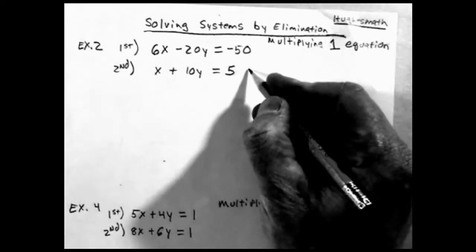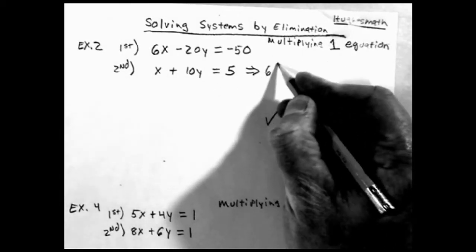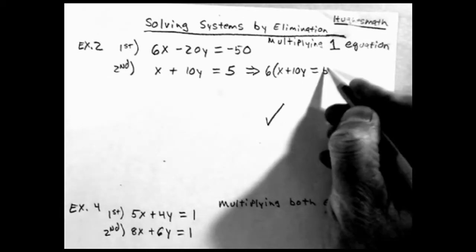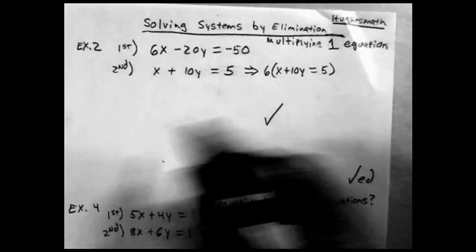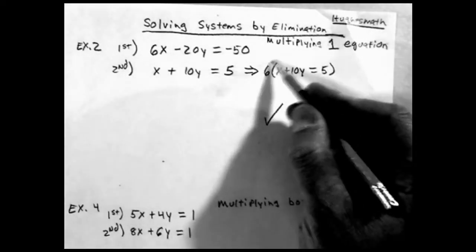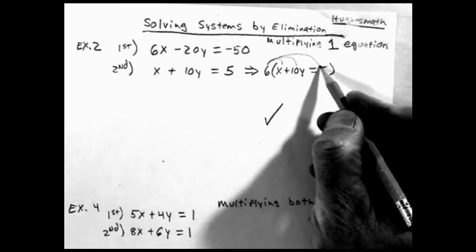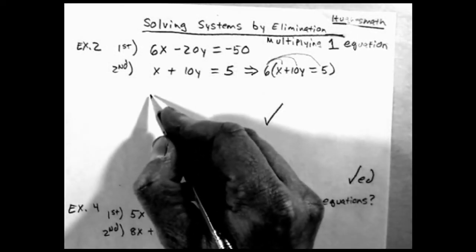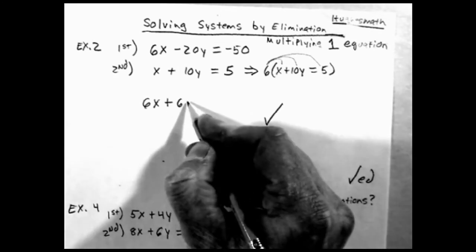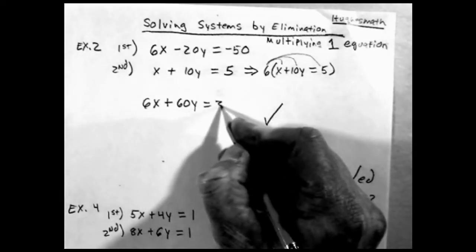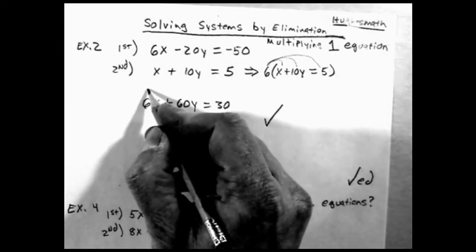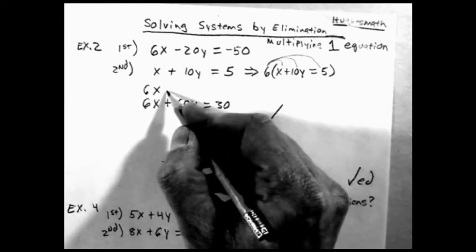So I'm going to multiply this by 6, and I'm going to end up with—I'm going to write it over here—I'm going to distribute the 6, and I get 6x plus 60y equals 30.